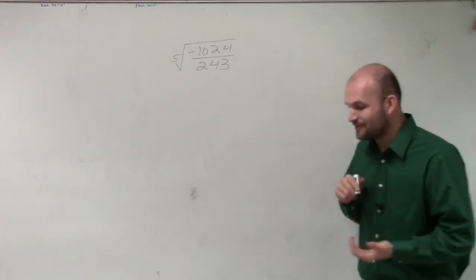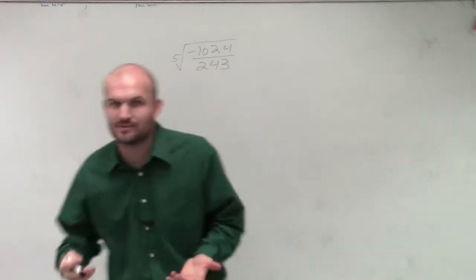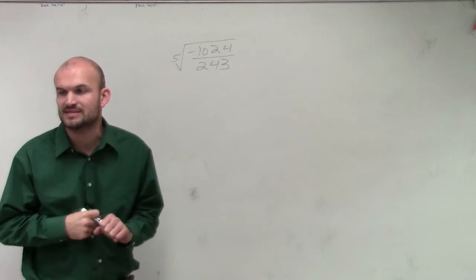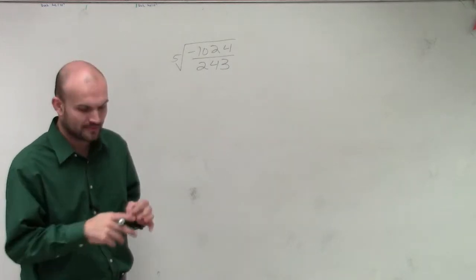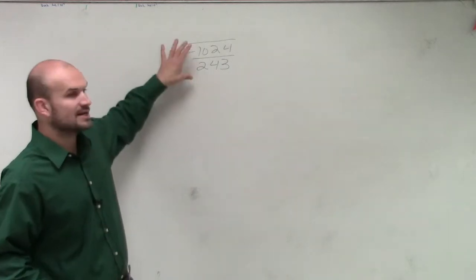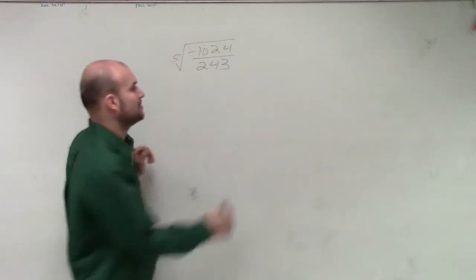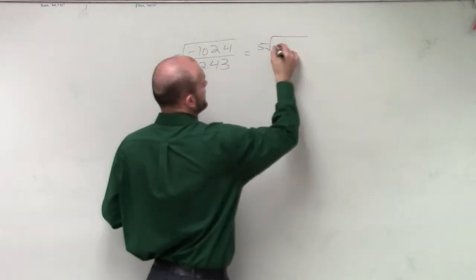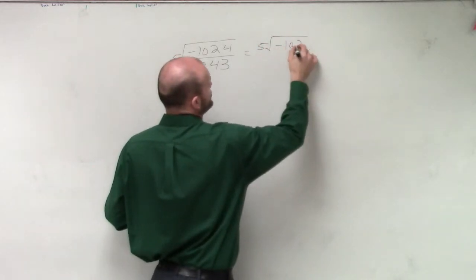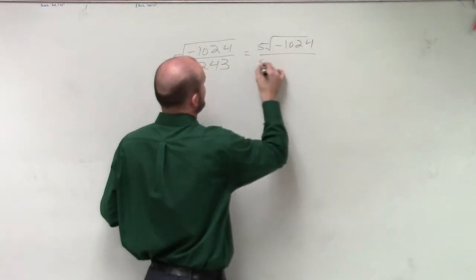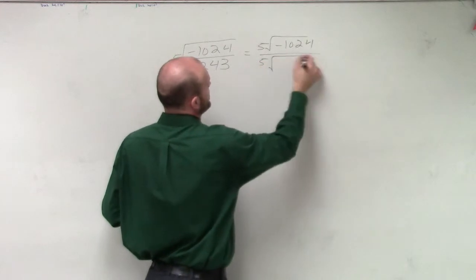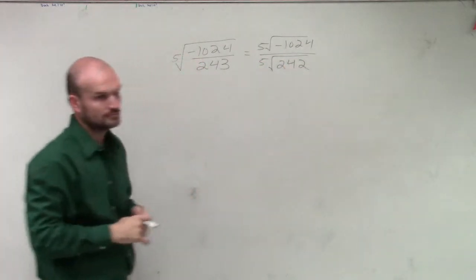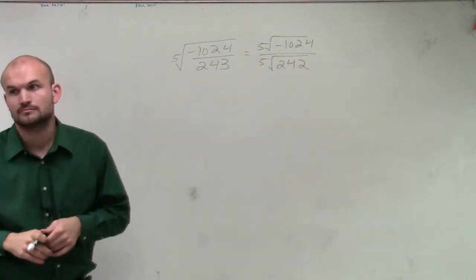So what we need to do, ladies and gentlemen, is let's just take a look at it and see if some things make sense. What I can do is break this up into the fifth root of negative 1,024 divided by the fifth root of 243.